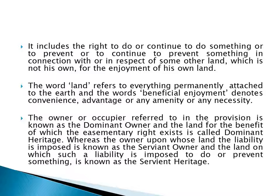The owner or occupier referred to in the provision is known as the dominant owner, and the land for whose benefit the easementary right exists is called the dominant heritage. The owner upon whose land the liability is imposed is known as the servant owner. The person who has the beneficiary easementary right is the dominant owner, the land on which that right is exercised is the dominant heritage, and the owner of the land burdened by that right is the servant owner. The land on which the liability to do or prevent something is imposed is known as the servant heritage.